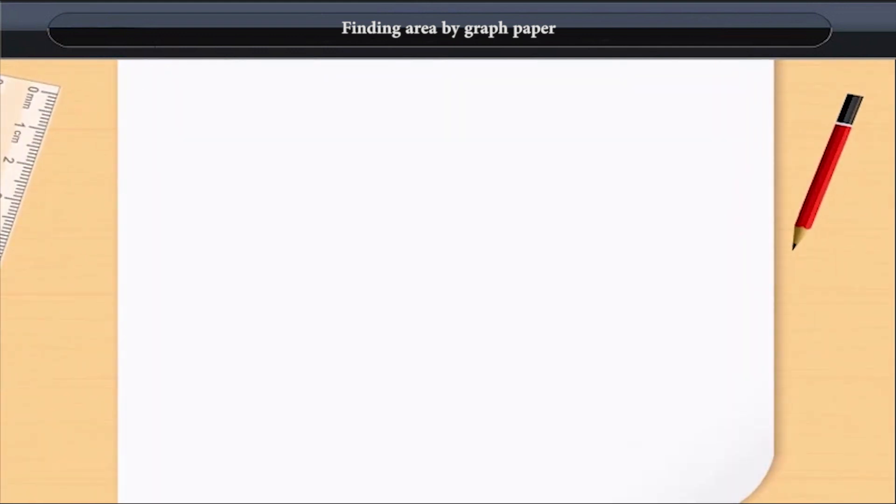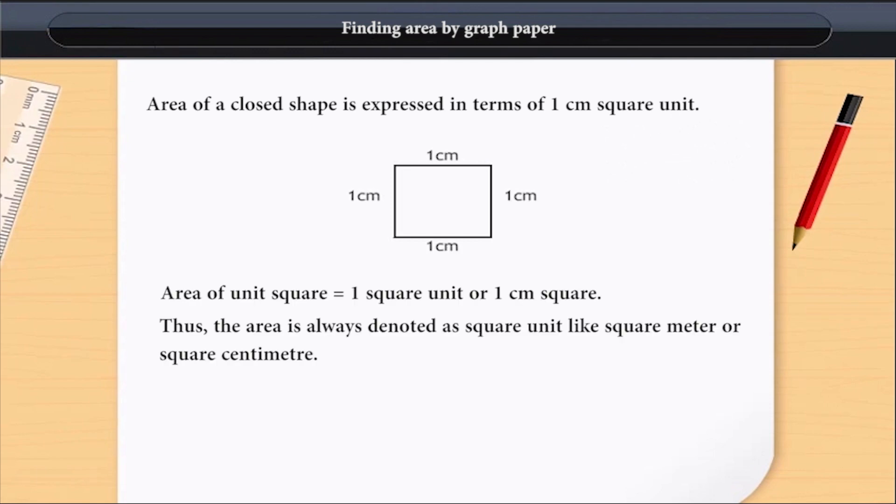Finding Area by Graph Paper. Area of a closed shape is expressed in terms of 1 cm² unit. Area of square unit is equal to 1 square unit or 1 cm².